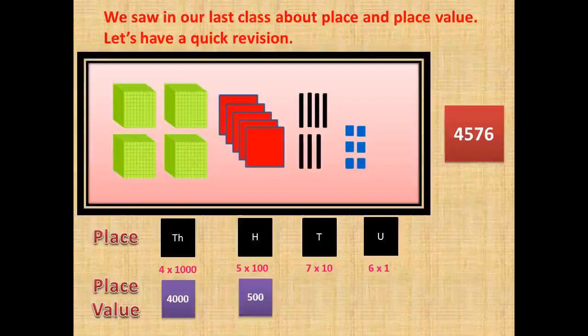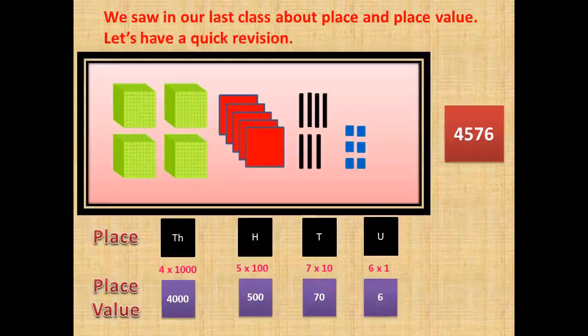5 in the hundreds place gives us 500. 7 in the tens place gives us 70. And 6 in the units place gives us 6. That's how the number is 4576.